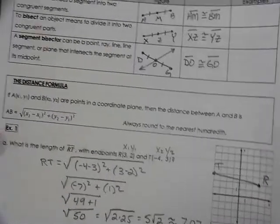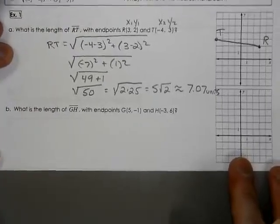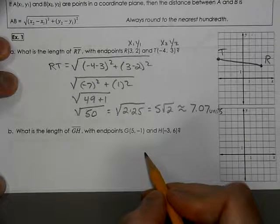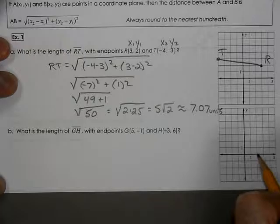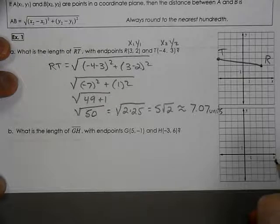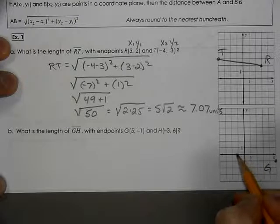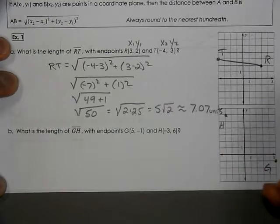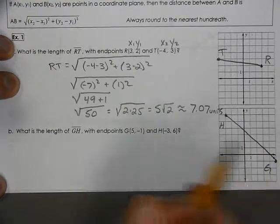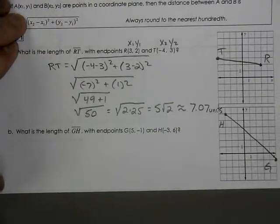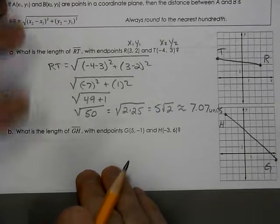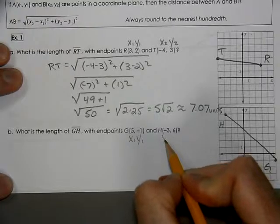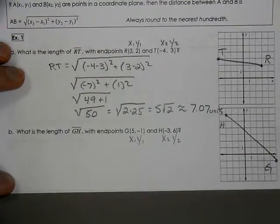Next, we're going to look at the length of GH. We plot our points, there's G and there's H. Figure out what that length would be. Again, it's not horizontal or vertical, so we can't count it. We're going to use the distance formula.